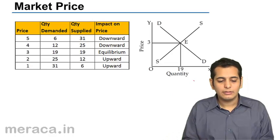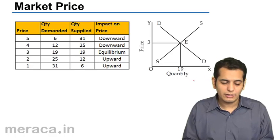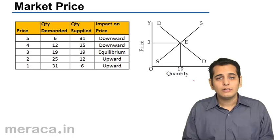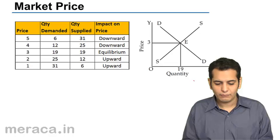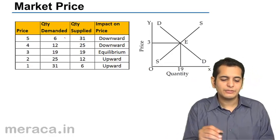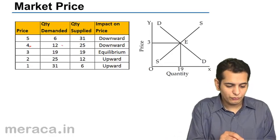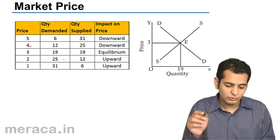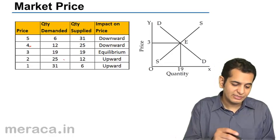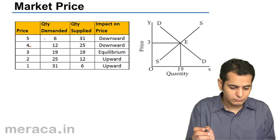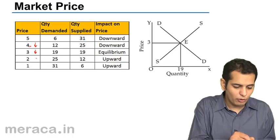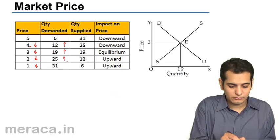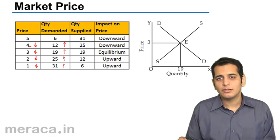This is a schedule wherein we have given the price of the product and the relative quantity demanded at these price levels. When the price is 5 rupees, 6 units are demanded. When the price is 4, 12 units are demanded. When the price is 3, 19 units are demanded. When the price is 2, 25 units are demanded. And when the price is 1, 31 units are demanded. As the price falls, the quantity demanded rises — this justifies the law of demand.